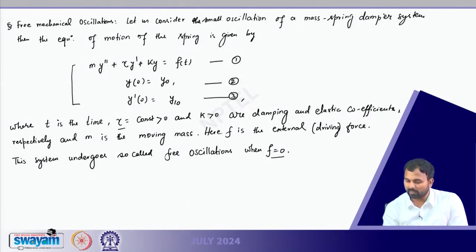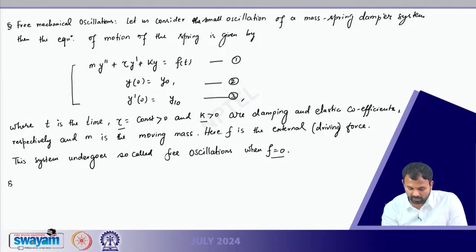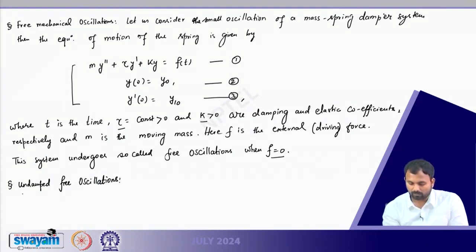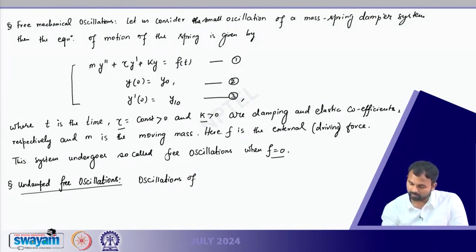Here, gamma is the damping coefficient and k is the elastic coefficient since we are dealing with a spring — it describes the elasticity of the spring. Undamped free oscillations occur when gamma equals 0. Obviously, when we say undamped, that means there is no damping, so gamma must be 0.